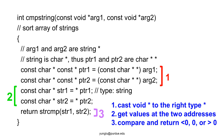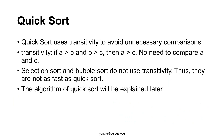We will talk about the quicksort algorithm in a later lecture. The quicksort algorithm uses a principle not used in selection sort or bubble sort — this principle is called transitivity. Transitivity says that if A is greater than B and B is greater than C, then A must be greater than C, making it unnecessary to compare A and C. This principle allows quicksort to avoid unnecessary comparisons, which is why quicksort is quick.